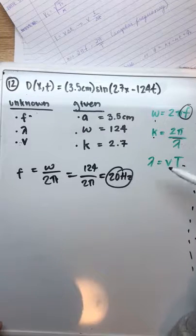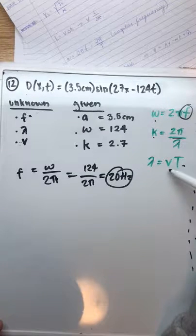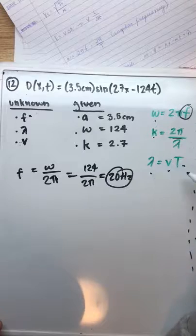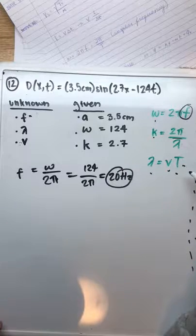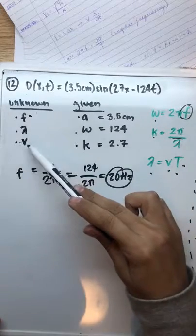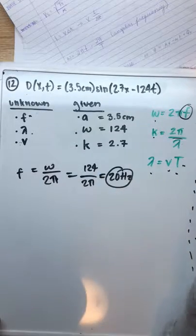If we look at these two equations, we don't know velocity yet, we don't know wavelength, and we don't have a period. So we can skip velocity and find wavelength.